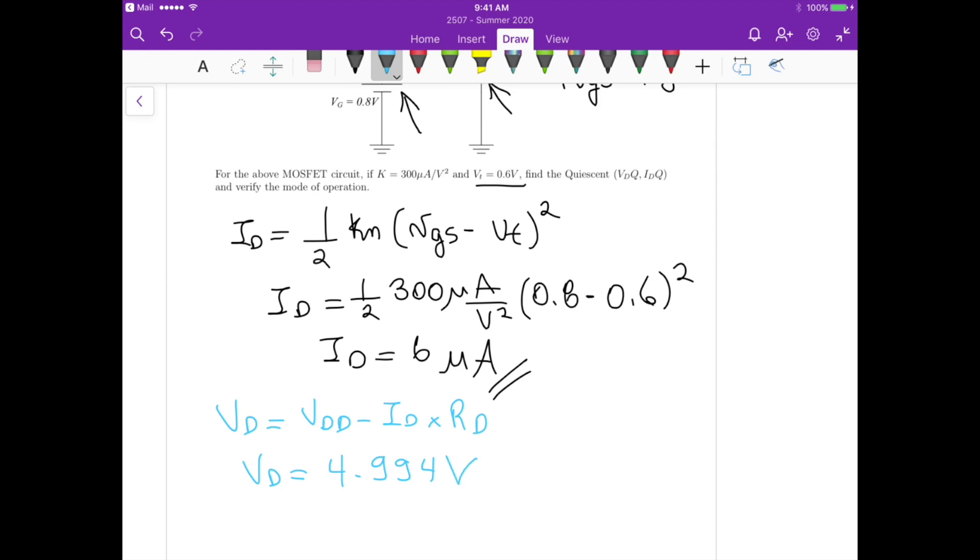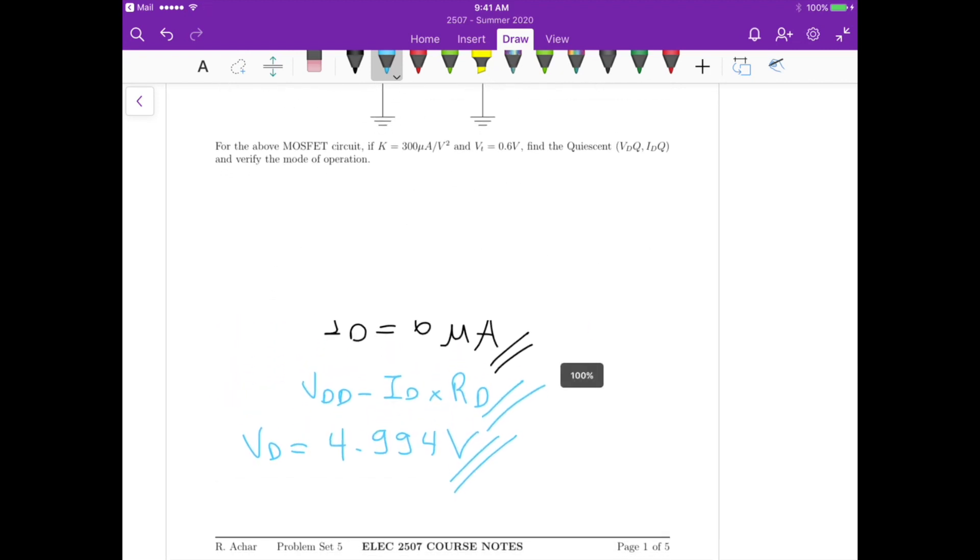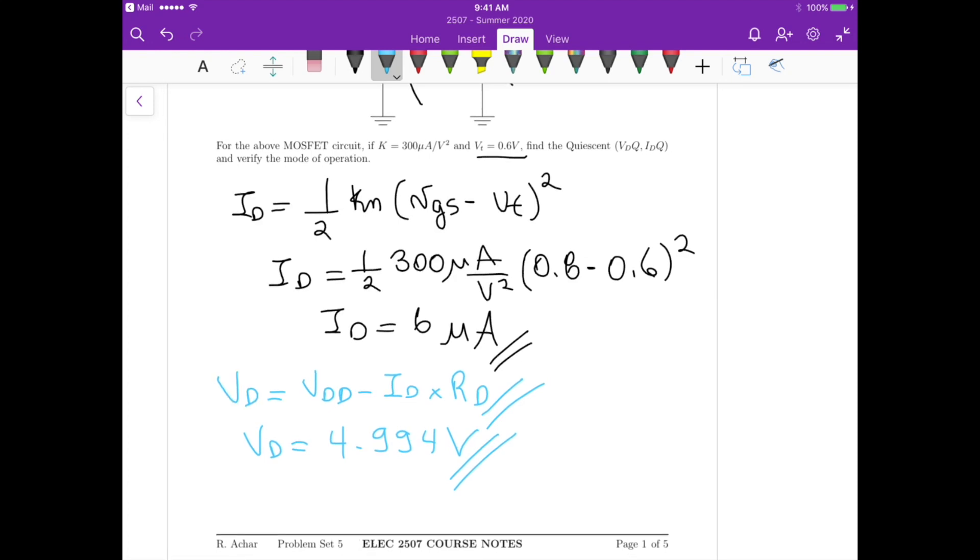And then, so we have figured out the value of Id and the value of Vd. In this case this is the value of Vds, because Vs equals 0, so Vd equals Vds. Vds in this case is Vd minus Vs, but we know that this is grounded, 0, so Vds equals Vd.